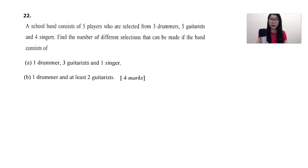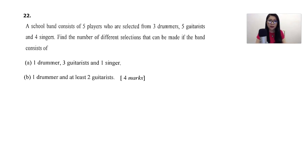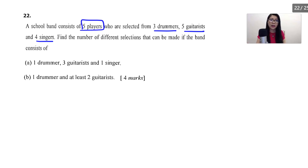Let's look at question number 22. This chapter is permutation and combinations — specifically combinations. A school band consists of 5 players selected from 3 drummers, 5 guitarists, and 4 singers. Find the number of different selections if the band consists of 1 drummer, 3 guitarists, and 1 singer.